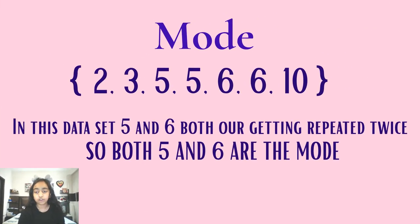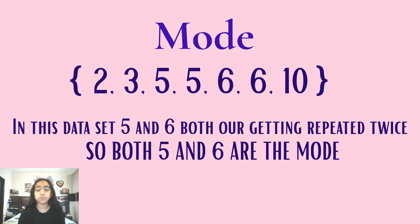We have another example here. In this data set we have two, three, five, six, and ten. Two is not getting repeated, three is not getting repeated, and ten is also not getting repeated. But five and six are both getting repeated twice, which means five and six are the mode. So the mode of this data set is both five and six.